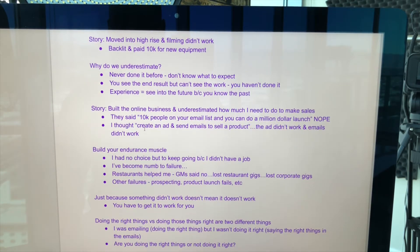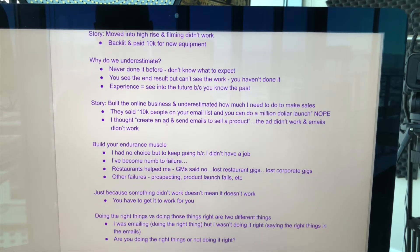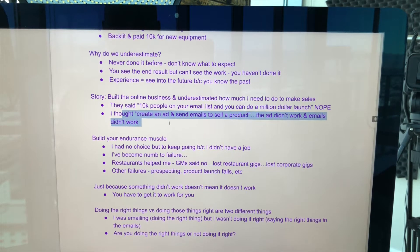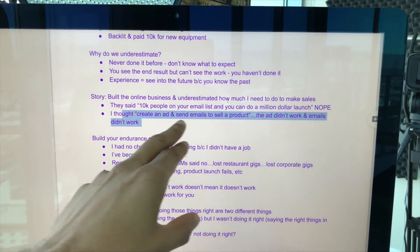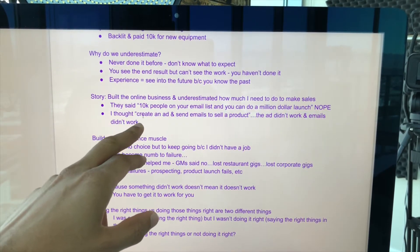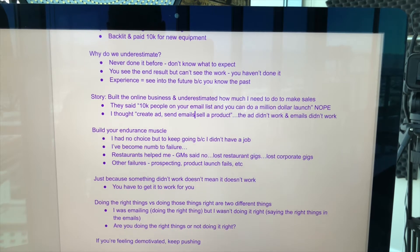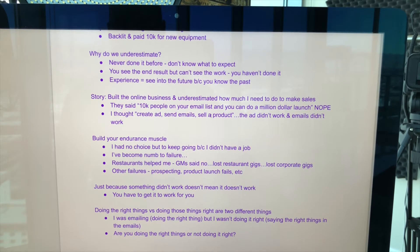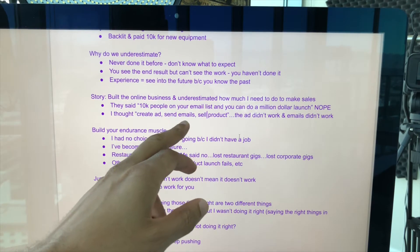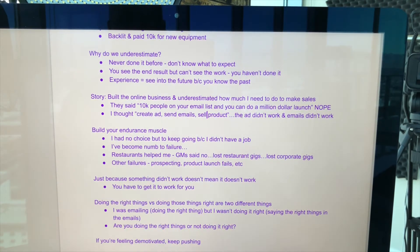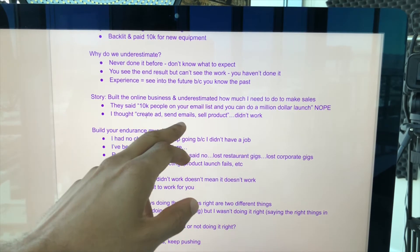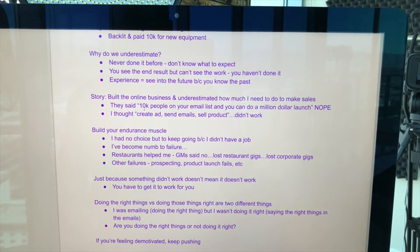I'll do that with words, I'll do that with sentences. So like here it says 'I thought: create an ad, send emails, and sell a product.' I can't really glance too much at that — I'd have to read it. So I want to be able to glance, so I shorten it to: 'create ad, send emails, sell product.' And then it says 'the ad didn't work, emails didn't work' — I shorten that to just 'didn't work' and delete the rest. So I took that whole sentence and deleted most of it. That way it's really short and I can just glance and see exactly what I need to talk about.